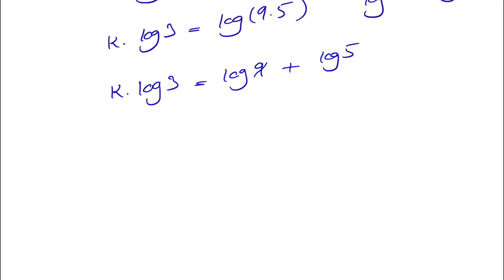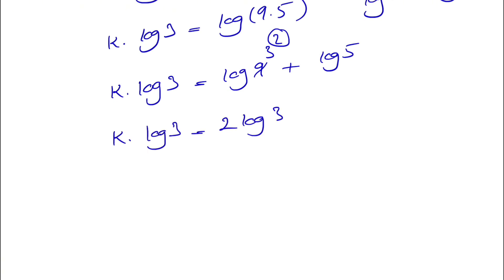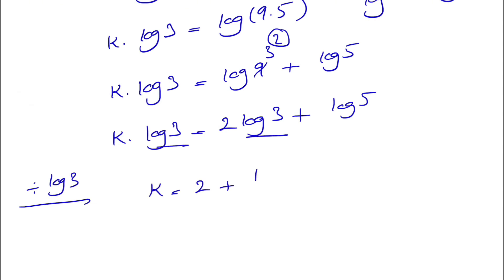For the 9, we can write it as 3 squared. Using the power rule again, the 2 comes down in front, so k times log of 3 equals 2 times log of 3 plus log of 5. Now we divide each side by log of 3, giving us k equals 2 plus log of 5 over log of 3.